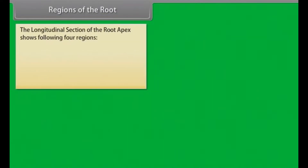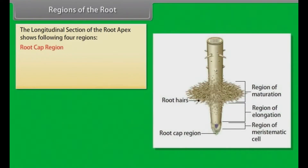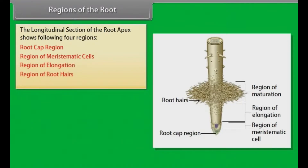The longitudinal section of the root apex shows the following four regions: root cap region, region of meristematic cells, region of elongation, region of root hairs, and region of maturation.